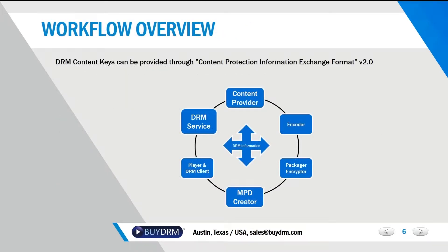There is also a working group that works with the content protection information exchange format — CPIX — which allows multiple entities in the ecosystem to exchange the DRM keys required to protect the content. The CPIX document contains the keys and DRM information and also provides a secure way to exchange this information, ensuring it's all encrypted and authenticated so each entity can receive the required information while processing the content.